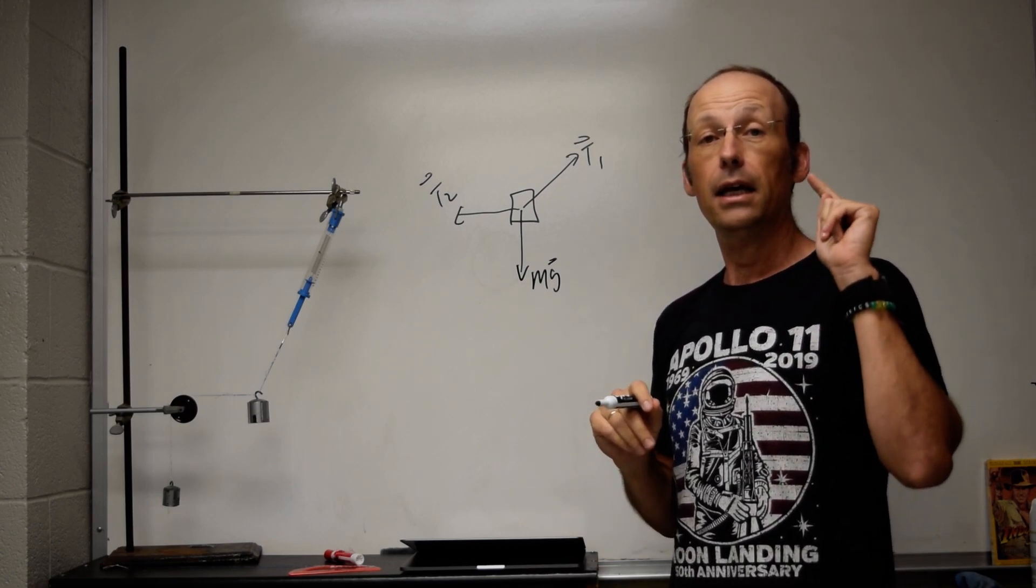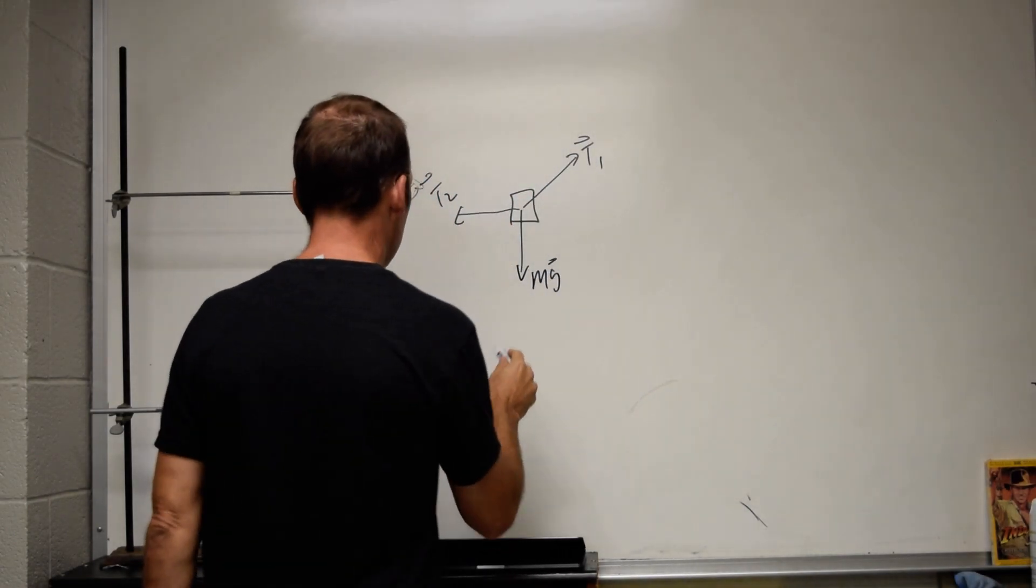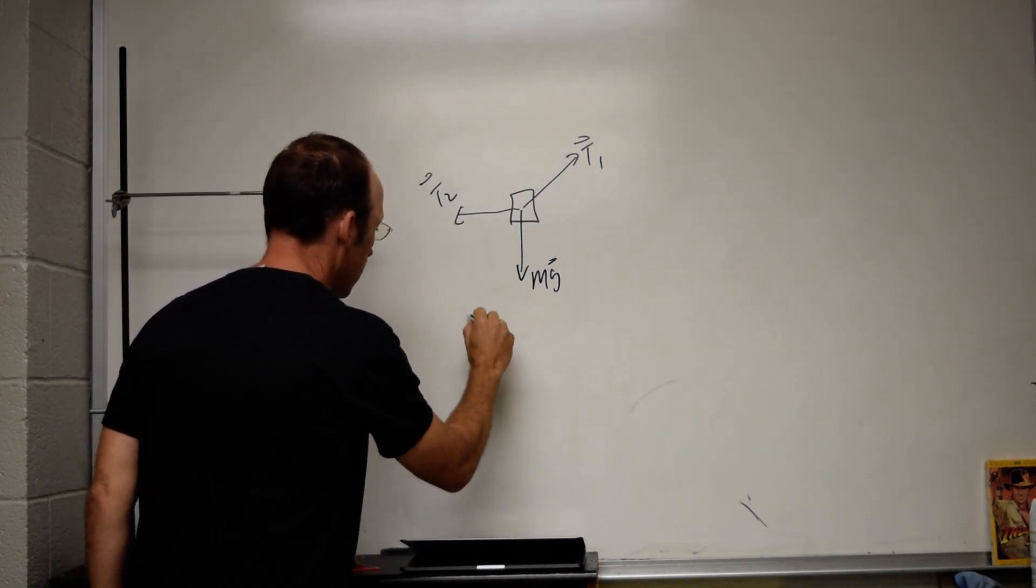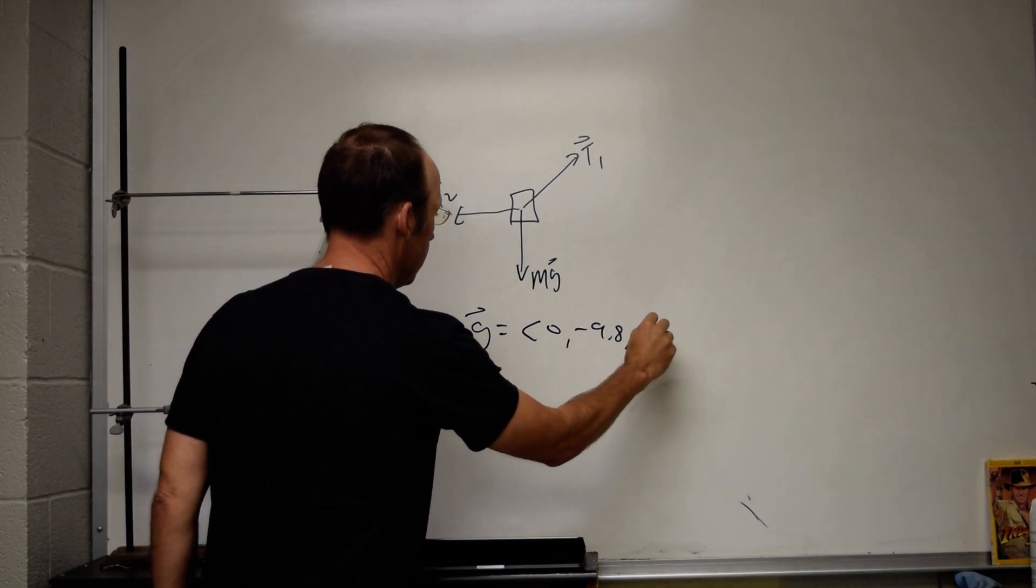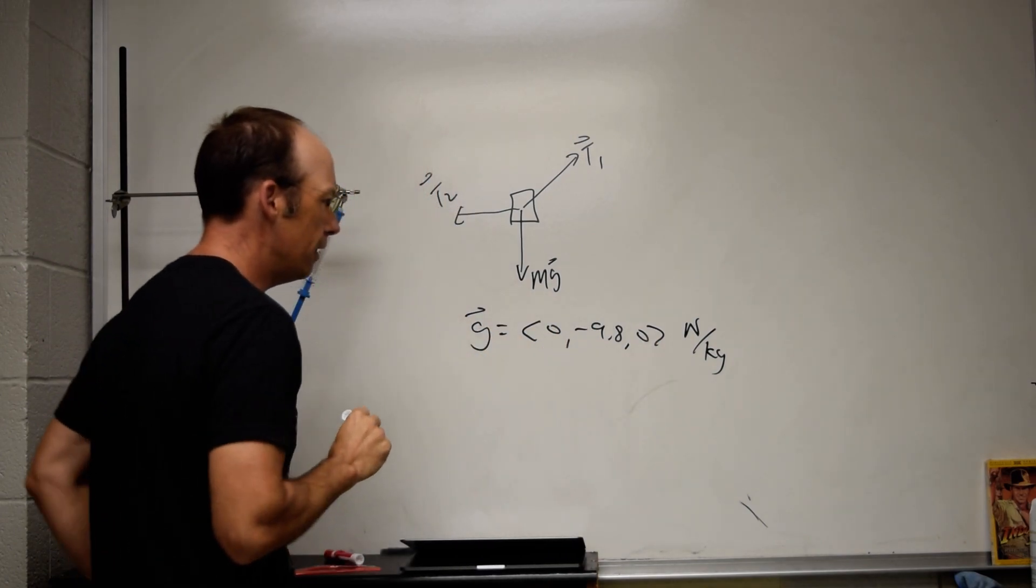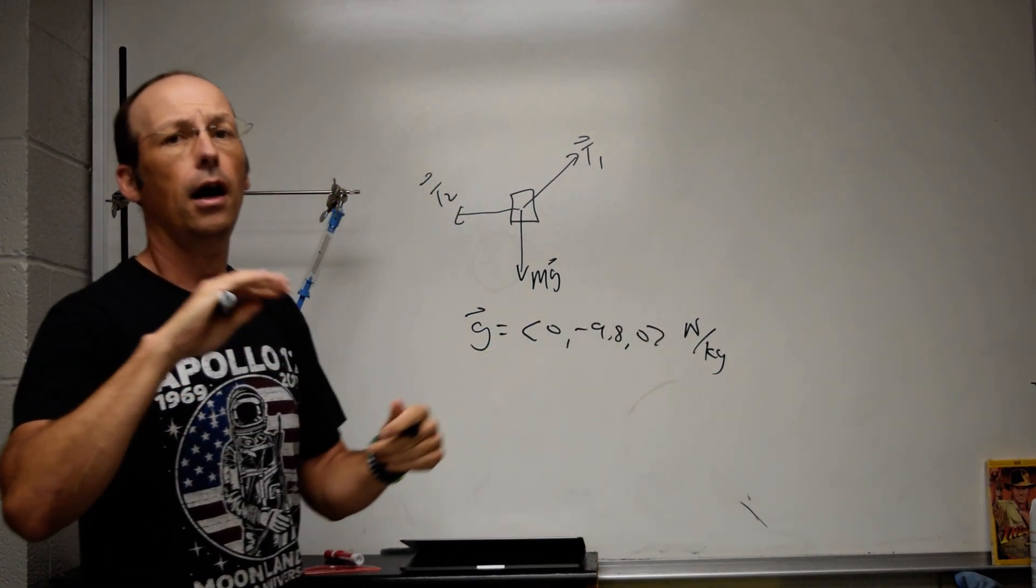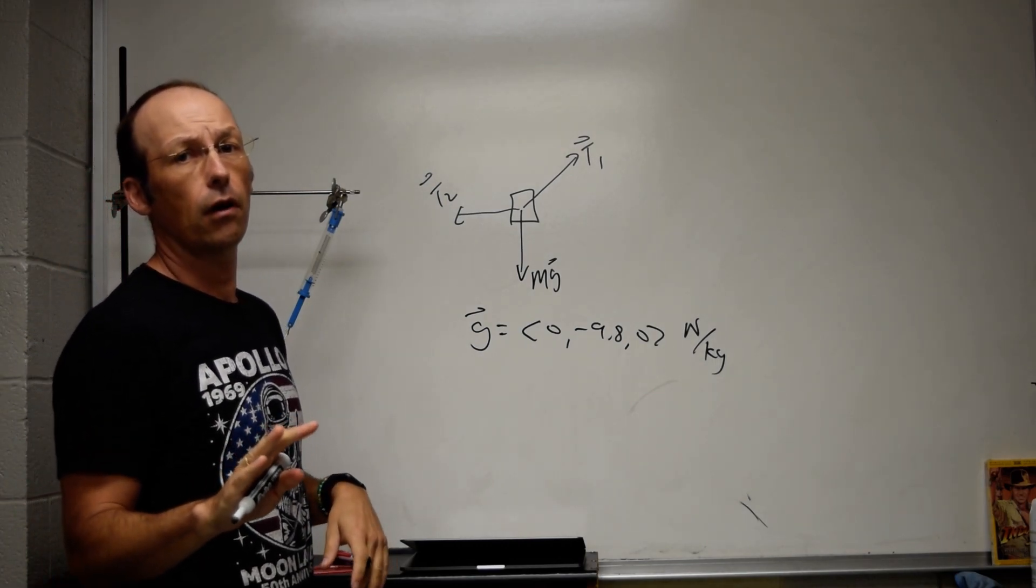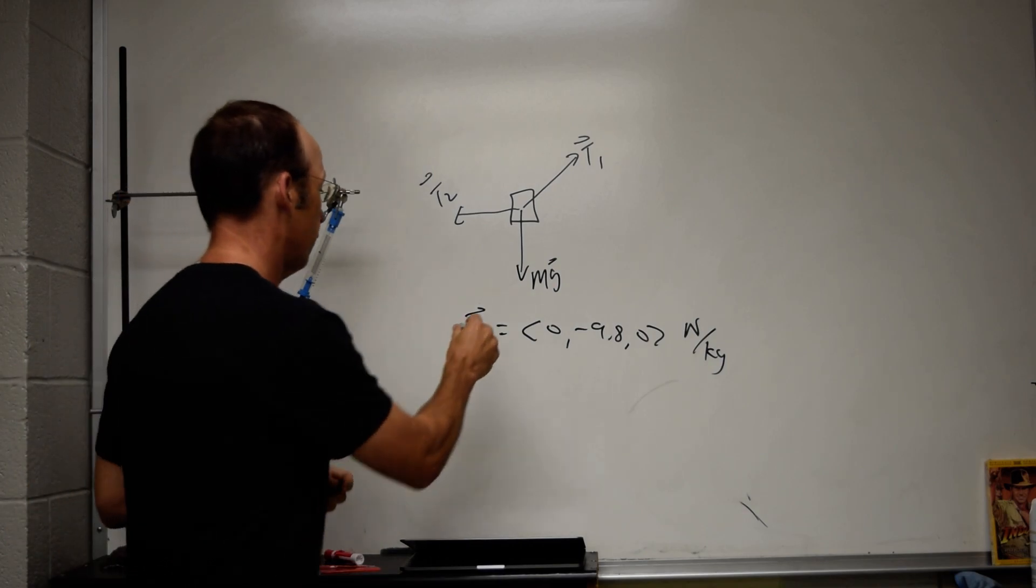The other important thing is this. This is the gravitational force. On the surface of the earth, the gravitational force is mg, where g is the vector (0, -9.8, 0) newtons per kilogram. Okay, so I'm using this three component notation for the gravitational force. You may use vectors in a different notation, but that's the way I'm going to use it. Because it's the best.